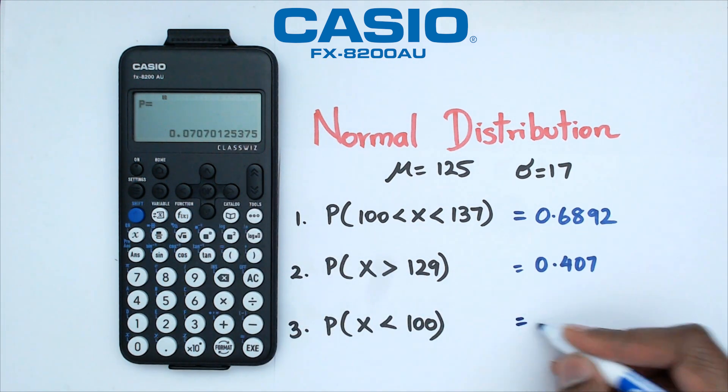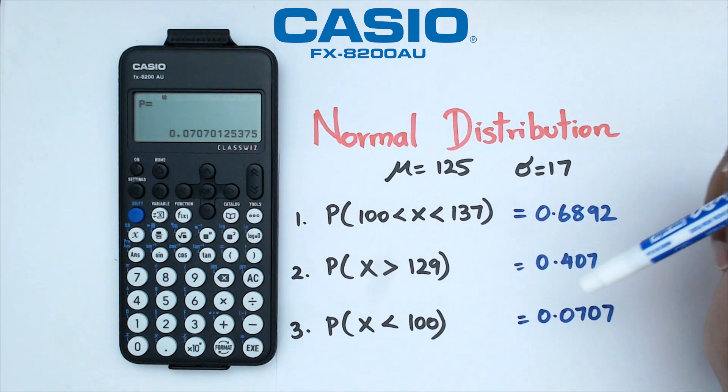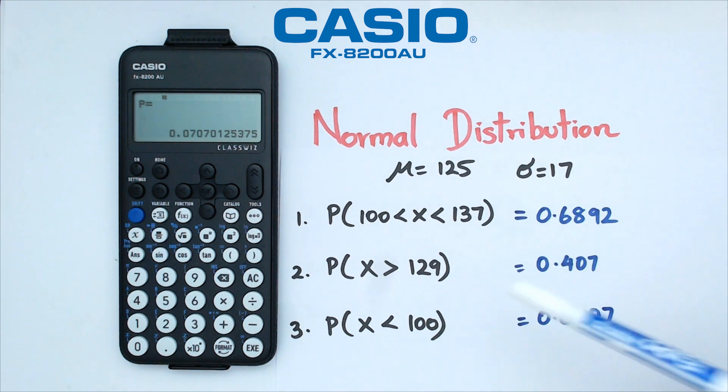And folks, as I mentioned before, with normal distribution probabilities in New Zealand when we do normal distribution, we like to stick with four decimal places. Now depending on where you're from, you might actually have different rules, so check with your schools and providers. But folks, that's pretty much how you do normal distribution on this particular Casio FX-8200 AU calculator.